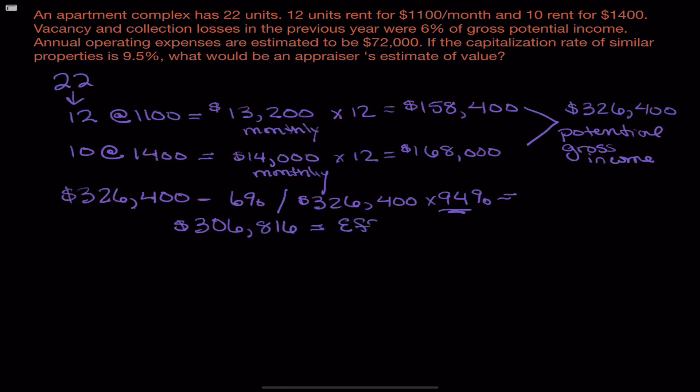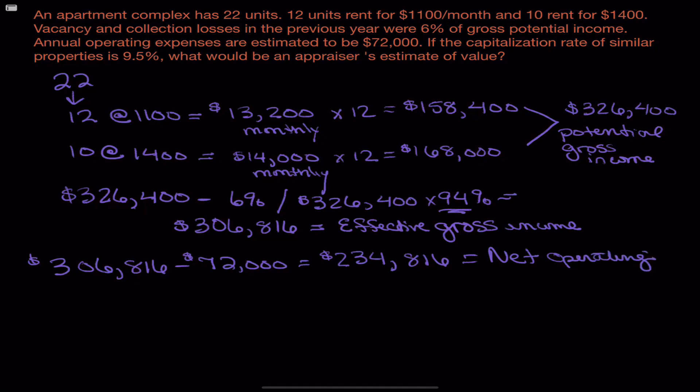This is our effective gross income. So this $306,816, that is before expenses. And we need to take those out. So the $306,816, subtract our operating expenses of $72,000 annually. That's going to give us $234,816. This is our net operating income.